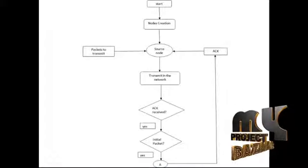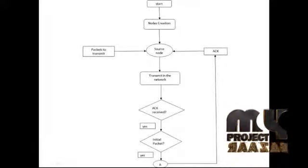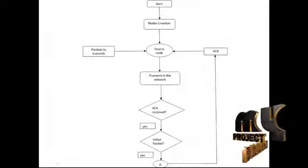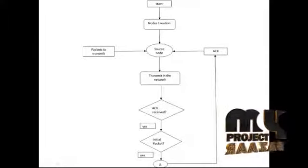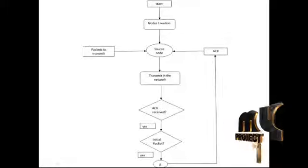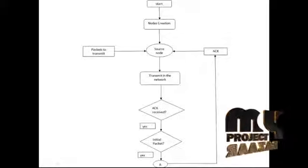Let us see the flow of the project. First, the program is started and nodes are created. In the wireless network, we use nodes for communication purposes. We can generate a large number of nodes to communicate with each other with a packet transmission rate. The problem in the wireless network is congestion control and delay. To reduce that, the proposed system uses window-based flow control and virtual rate calculation. The packet to be transmitted is chosen, then transmitted among the nodes to the destination node.